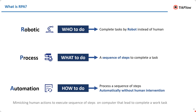The last one and the most important one: automation — process a sequence of steps automatically without human intervention. So RPA is actually mimicking human actions to execute a sequence of steps on a computer that leads to completing a work task.